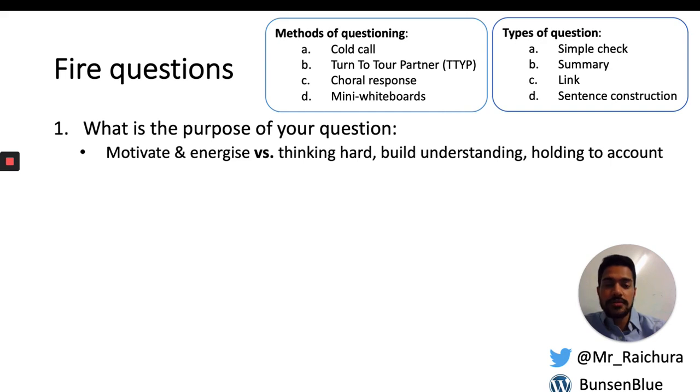Next, what are the types of questions? I've already given some examples. A simple check: do they know what I've just said? That's like a really simple question, more for motivating and energizing. Summary questions are really useful at checking they've followed your explanation. Can you summarize to your partner what I mean by an alkali metal having low density? Go. And they tell their partner and they summarize what you've said, three, two, one, hands up, and then you might pick someone to give you that explanation.